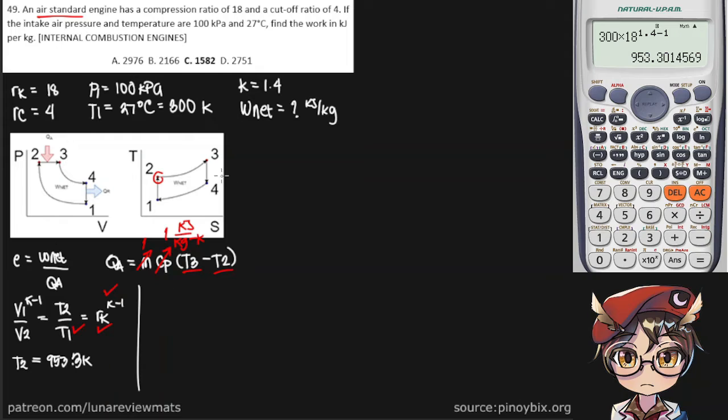Now we can actually do the same for T3. If you remember, the cutoff ratio is simply P3 over P2. And since it is directly proportional to temperature, this is T3 over T2. Now this is a straight line, so we don't need to put a k in either of these variables. And we also know that P3 over P2 is simply R sub C. We know that, and we also know T2. So we only need to multiply T2 by 4. And that is our T3, 3813.2 Kelvin.